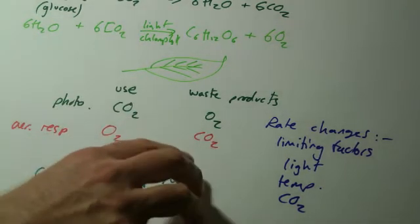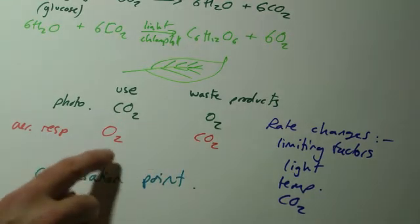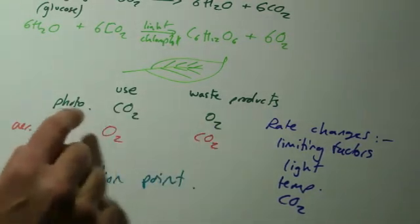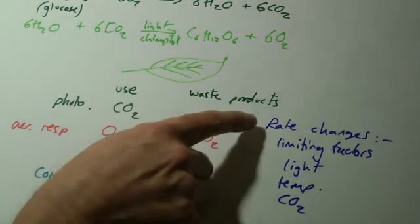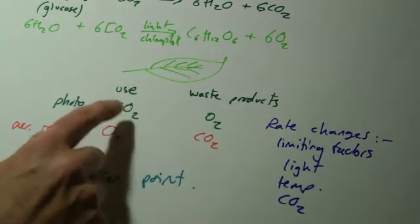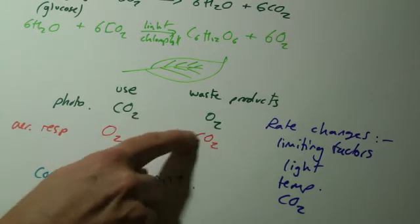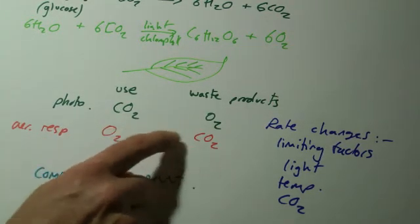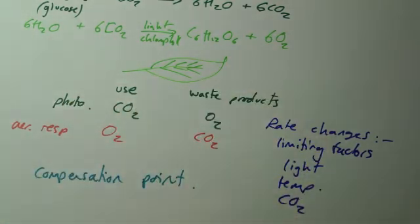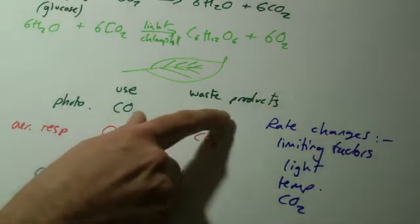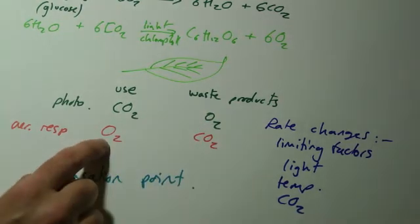As the day continues and you get more light, perhaps it warms up, photosynthesis will tend to increase its rate. So there is more carbon dioxide being used up than is being produced inside the plant. It doesn't matter, so this carbon dioxide will diffuse in from outside the leaf. And it will be producing more oxygen than it uses up.